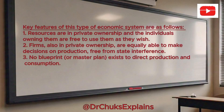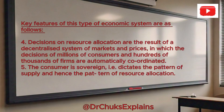The key features of this type of economic system are as follows. Resources are in private ownership and the individuals owning them are free to use them as they wish. Firms, also in private ownership, are equally able to make decisions on production, free from state interference. No blueprint, or master plan, exists to direct production and consumption. Decisions on resource allocation are the result of a decentralised system of markets and prices, in which the decisions of millions of consumers and hundreds of thousands of firms are automatically coordinated.